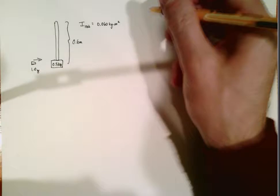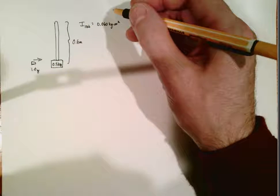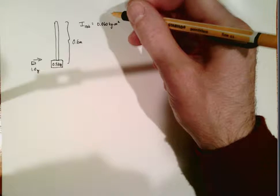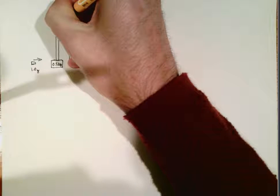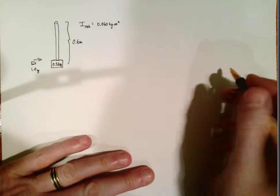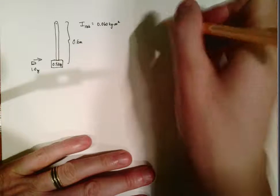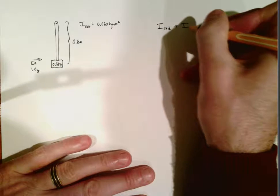So actually first part just asks us to find the total rotational inertia of the block, rod, and bullet system around point A. Point A is up here. So we have the rotational inertia of the rod, and really the only way to do this is by adding their individual rotational inertias together.